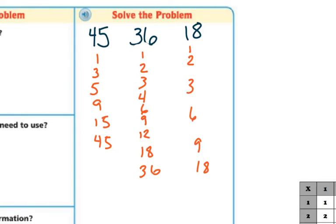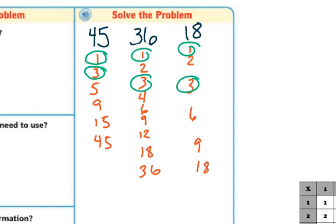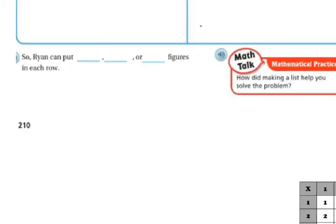Now I just need to find the things they have in common. They all three have 1. Only two of them have 2, so I can't circle it. They all have 3 in common. They don't all have 5 or 4. Two of them have 6. They all have 9 in common. So the common factors are 1, 3, and 9. That means Ryan can put 1, 3, or 9 figures in each row.